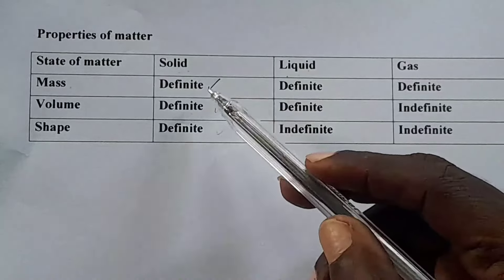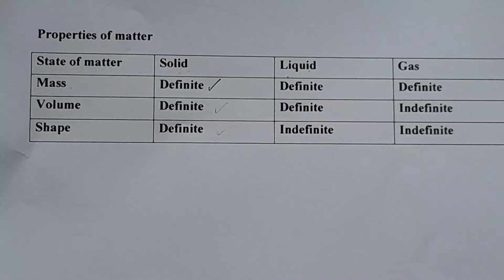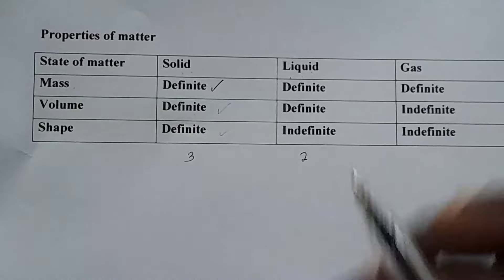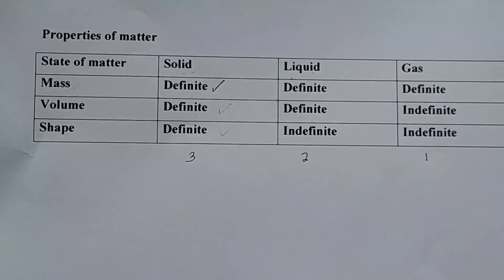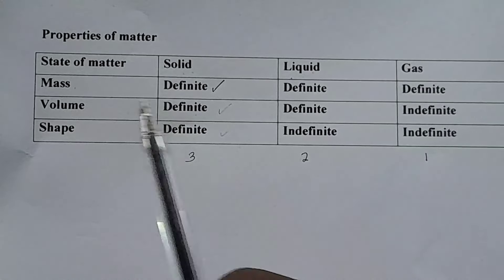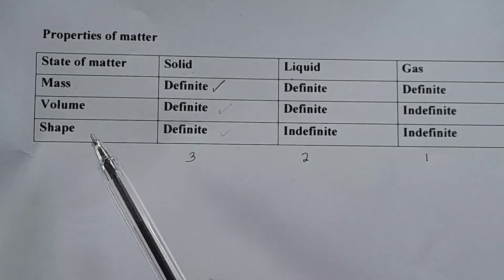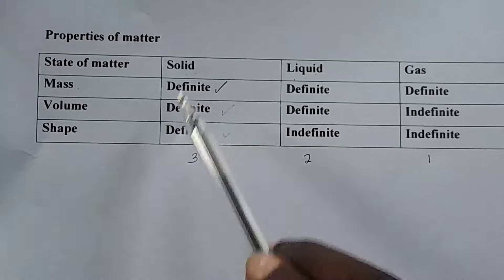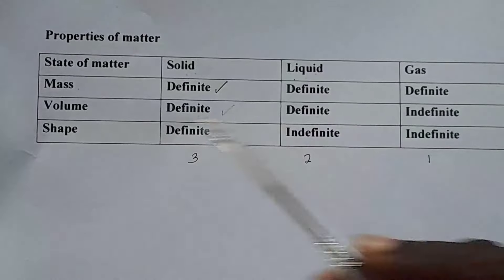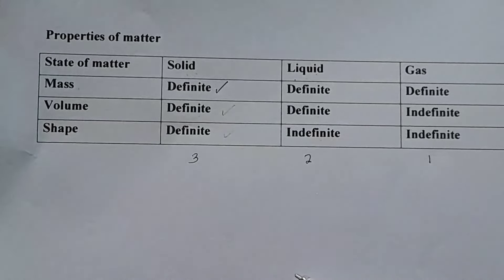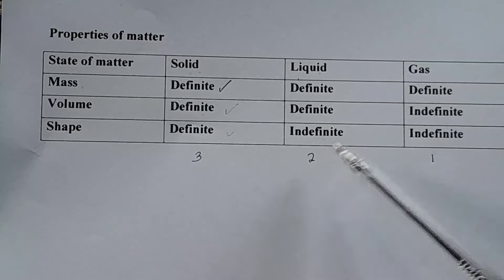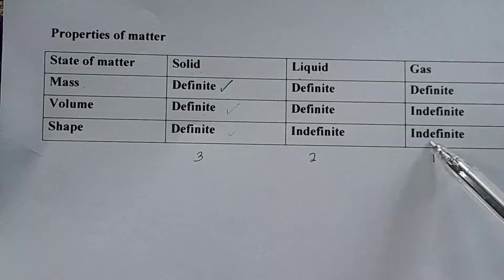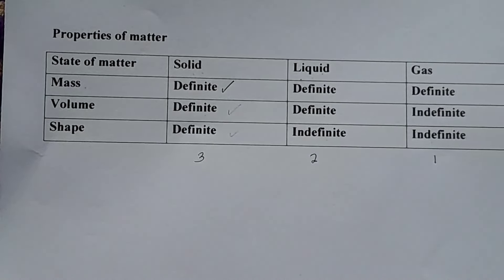To make it simpler: know the three states in order — solid, liquid, gas — and the properties in order — mass, volume, shape. For solid, all three are definite. For liquid, the first two are definite (definite mass, definite volume), but the last one is indefinite — liquids have no definite shape; they take the shape of their container. For gas, mass is definite, but volume and shape are both indefinite.